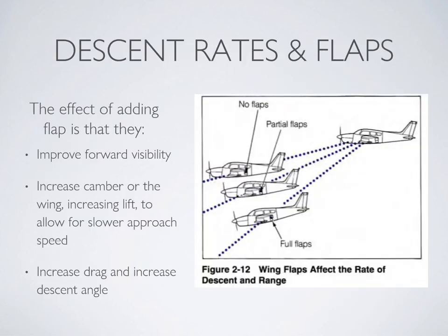Let's talk about flaps. The most important thing to remember is that flaps steepen your approach. Adding flap increases lift but at the cost of more drag. So if you're descending and you add flap, you'll need to add more power to maintain the same descent profile — otherwise you'll find yourself descending much more quickly. Flaps do allow you to fly more slowly due to the extra lift, but the cost is more drag.